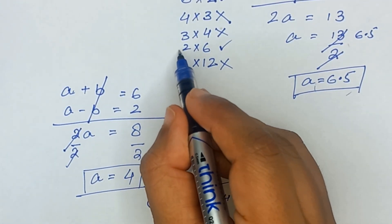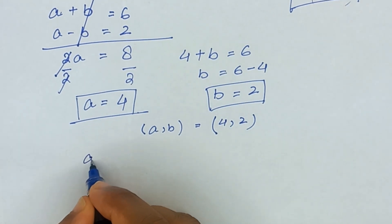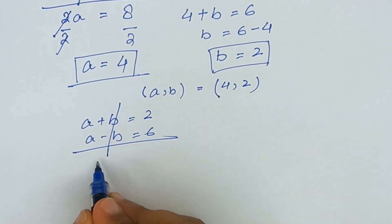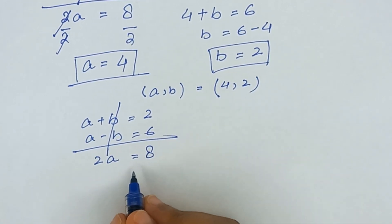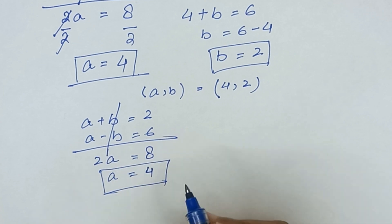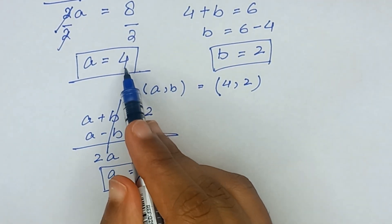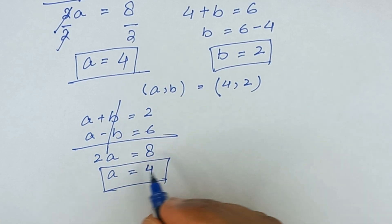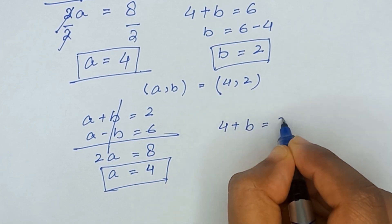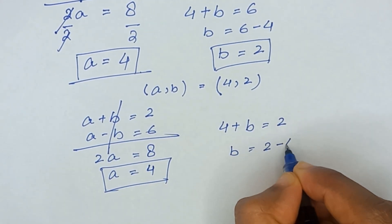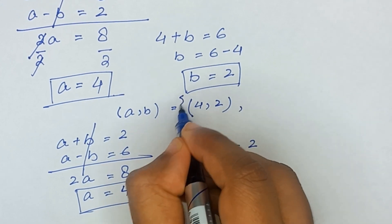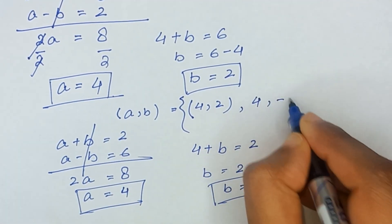Now taking the second factor pair: a plus b equal to 2 and a minus b equal to 6. Adding these equations, the b terms cancel and we get 2a equal to 8, so a equals 4 — the same value as before. Substituting into a plus b equals 2 gives 4 plus b equals 2, so b equals 2 minus 4, which means b equals minus 2. So here a equals 4 and b equals minus 2.